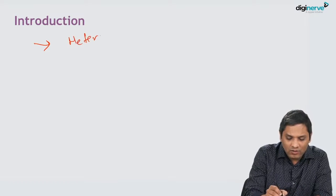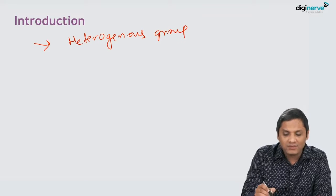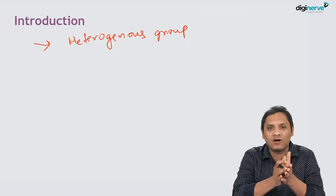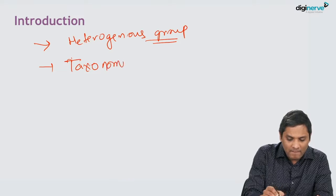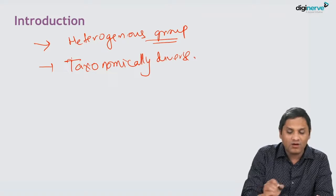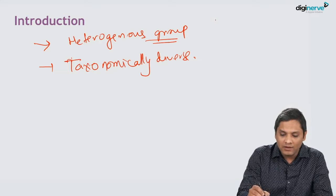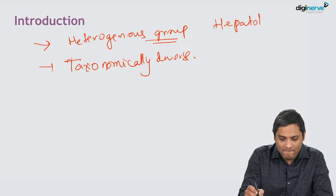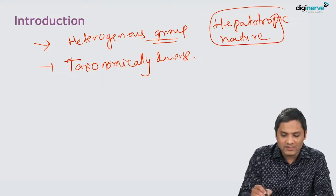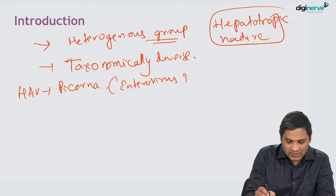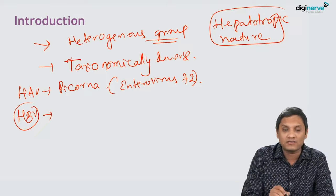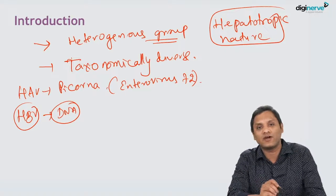Hepatitis viruses are a heterogeneous group — they are not taxonomically belonging to the same group; they are taxonomically diverse. They are discussed together because of the common property that they are all hepatotropic. For example, hepatitis A virus belongs to Picornaviridae, specifically enterovirus 72. Hepatitis B is the only hepatitis virus that is a DNA virus; the rest are RNA viruses.